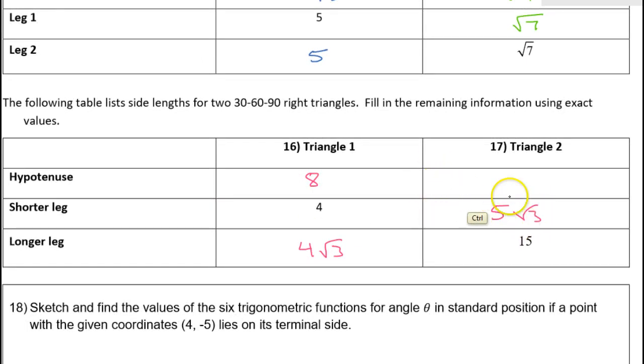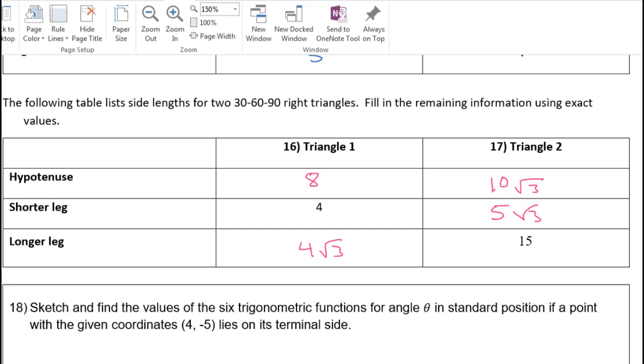Now remember, the hypotenuse should be double this. Just like when the short leg was four, the hypotenuse was eight. So if I take this and I multiply by two, that's simply going to give me 10 radical three.